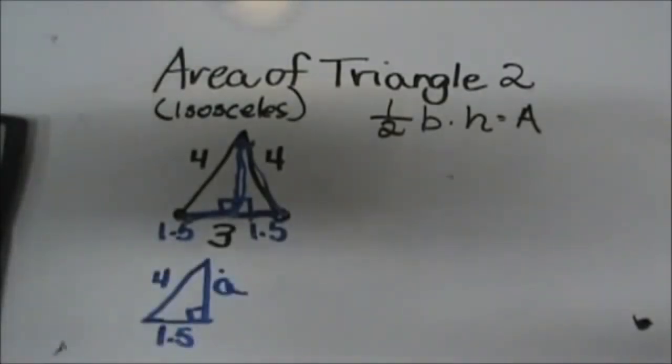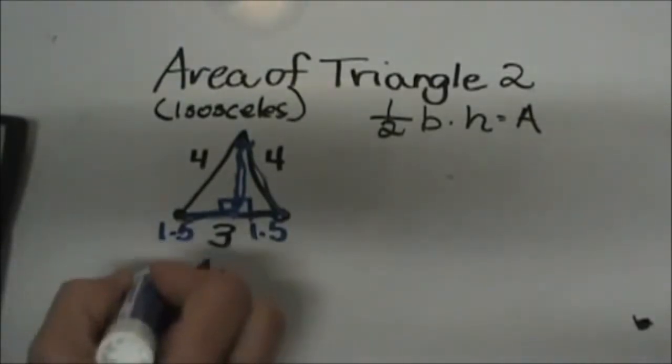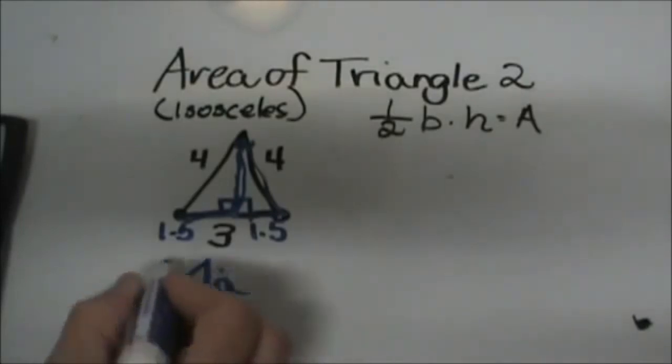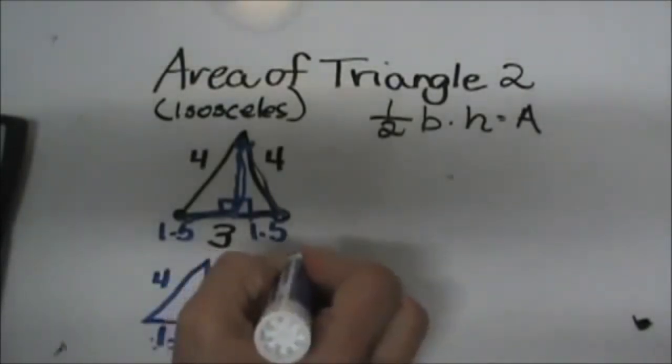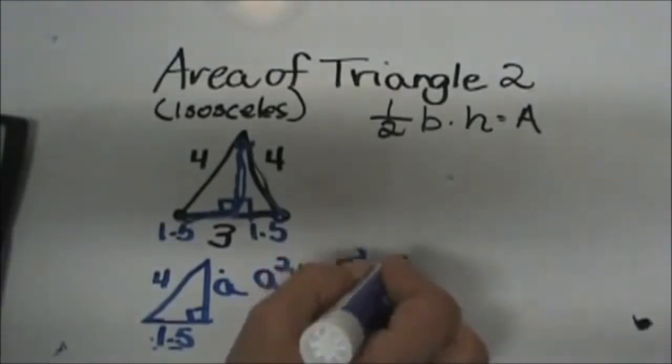So now I can use the Pythagorean Theorem. A² + B² = C² and I don't know A but I have B and I'm solving for C. So A² + 1.5² = 4².